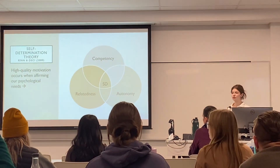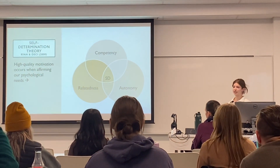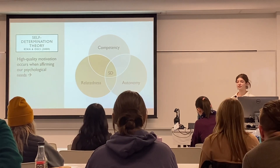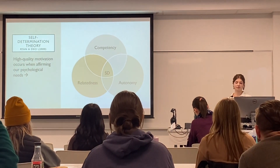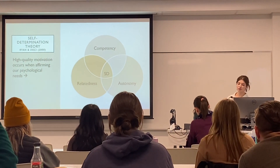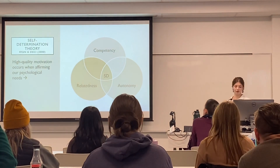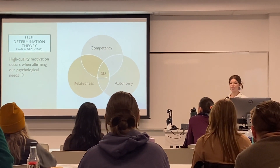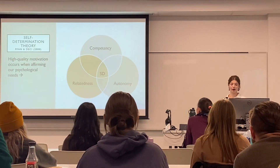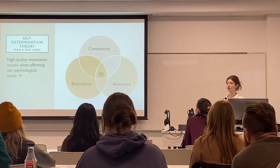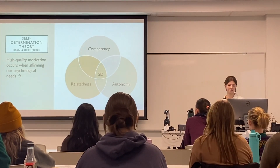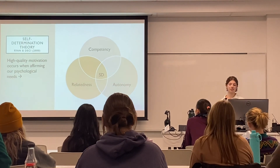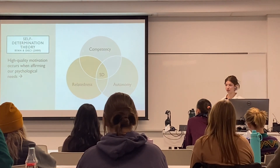So then why would someone choose to have a disability identity? It ultimately depends on what's in the best interest for that person. The self-determination theory of motivation proposed by Ryan and Deci suggests that people will be most motivated to behave in ways that affirm their sense of autonomy, competency, and relatedness. When fulfilled, this will lead the person to become self-determined.